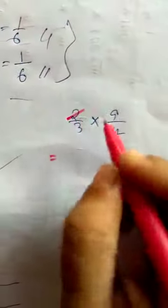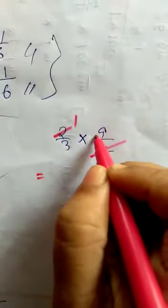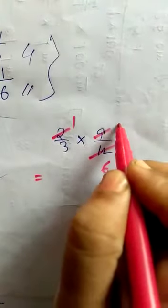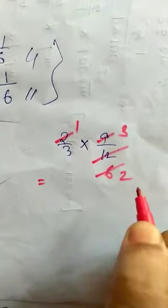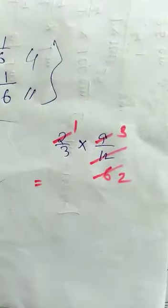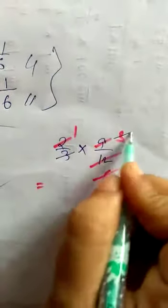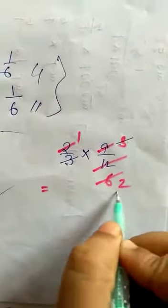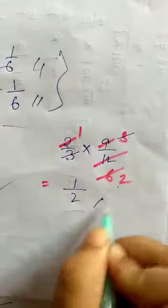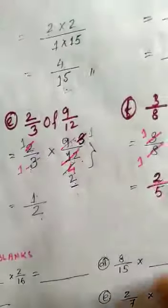Another way to solve question 1e: 2/3 × 9/12. Divide 3 into 3 giving 1, and 3 into 9 giving 3, and 3 into 6 — wait, divide 2 into 12 giving 6. Then 3 and 3 cancel. We get 1/2. Both methods give the same answer, 1/2.